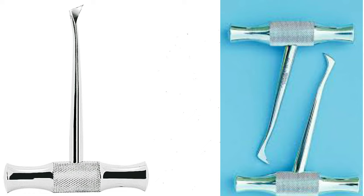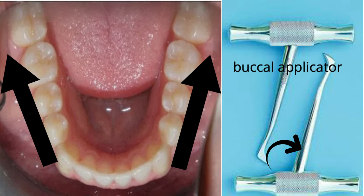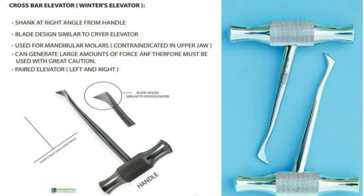There are two common types of these crossbars: the socket applicator crossbar and the buccal applicator crossbar. The difference between them is in the angle between the handle and the shank — in the socket applicator it's purely 90 degrees perpendicular, while in the buccal applicator it's obtuse in order to adapt to the buccal divergence of the lower jaw. It can generate a large amount of force and therefore must be used with great caution and not in the upper jaw, since its bone is spongy and weak. It's also called Winter's elevator.